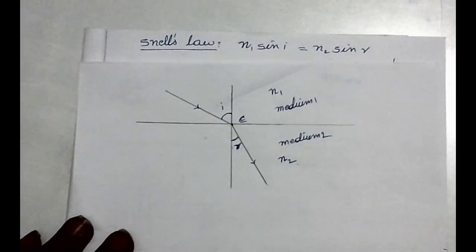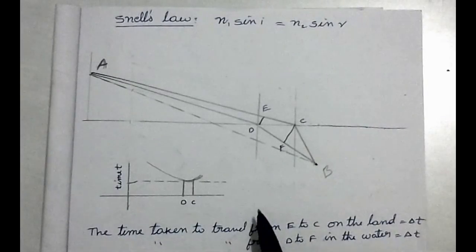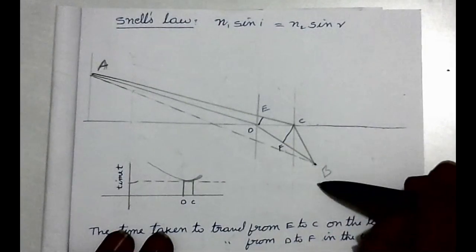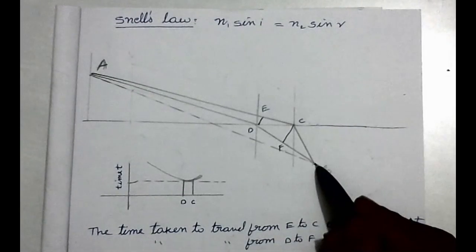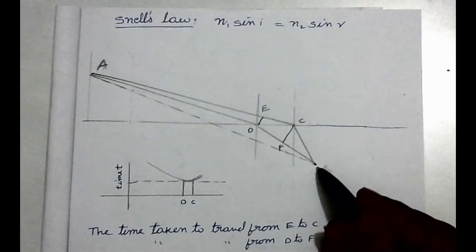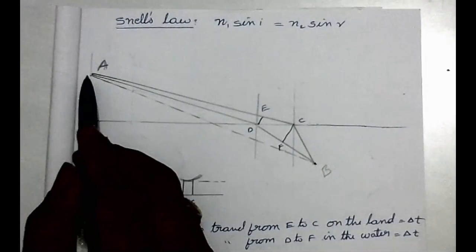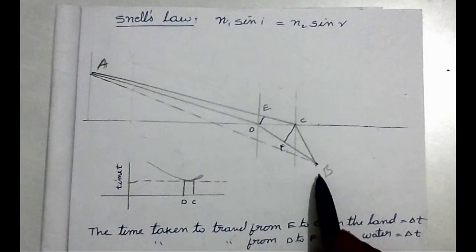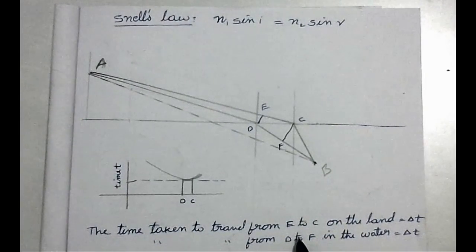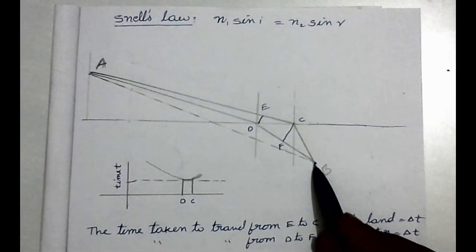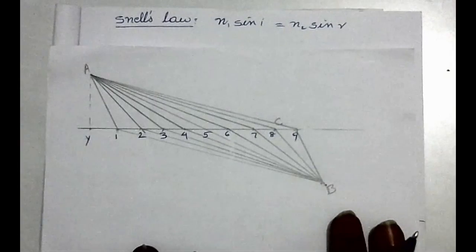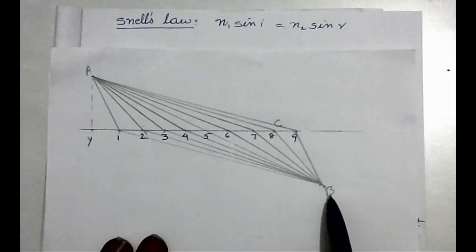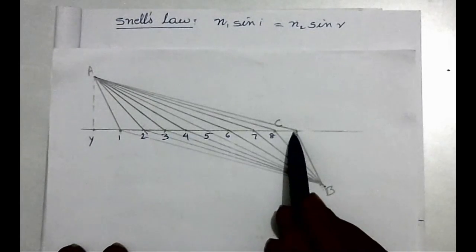n1 sin(i) equals n2 sin(r). Now let us derive Snell's Law. To derive this, let us assume a situation: this is a shoreline; below the shoreline is water and above is land. A person has fallen into the water and is screaming for help. Another person watching this accident wants to save the person and has to move from U to B as quickly as possible, choosing the path through which he can reach B in the least amount of time.